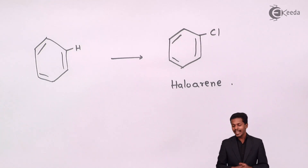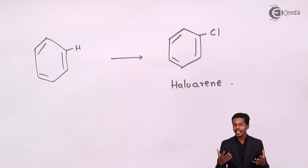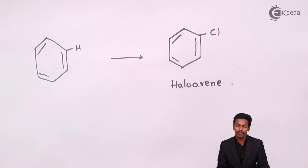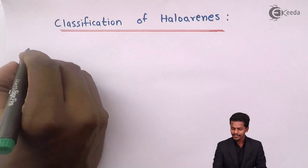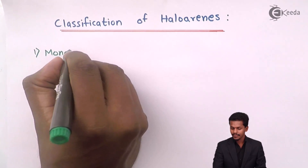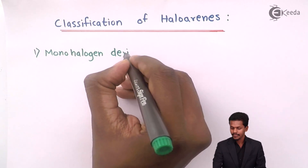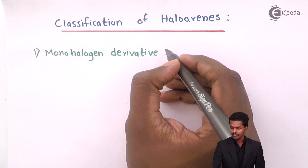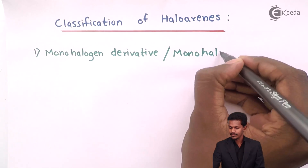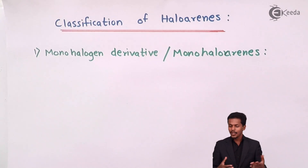Not only one hydrogen atom, but several hydrogen atoms can be replaced with halogen atoms, and that is what we are now concerned with — there are certain classifications. The classification of haloarenes can be classified into three categories. The first one is monohalogen derivatives of arenes, or monohaloarenes.